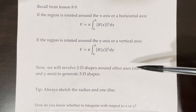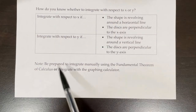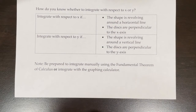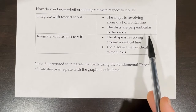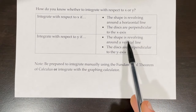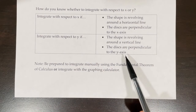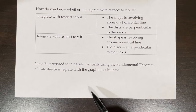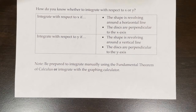So now we're going to revolve those 2D shapes around other axes to generate three-dimensional shapes. As we discussed in the previous lesson, it's always a good idea to sketch the radius and one disk to visualize what you're doing. Here's a helpful chart: you integrate with respect to x if the shape is revolving around a horizontal line and the disks are perpendicular to the x-axis. Integrate with respect to y if the shape is revolving around a vertical line or the disks are perpendicular to the y-axis. Be prepared to integrate manually using the fundamental theorem of calculus or with the graphing calculator — both on the AP exam and in this video.